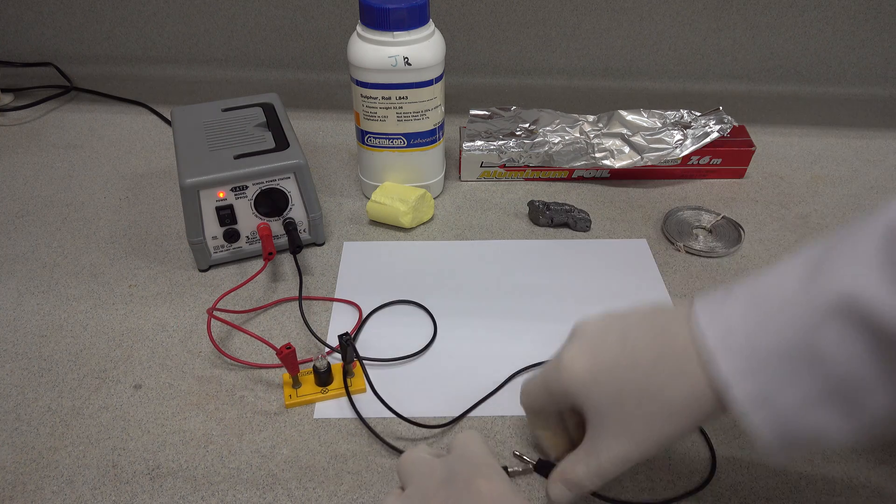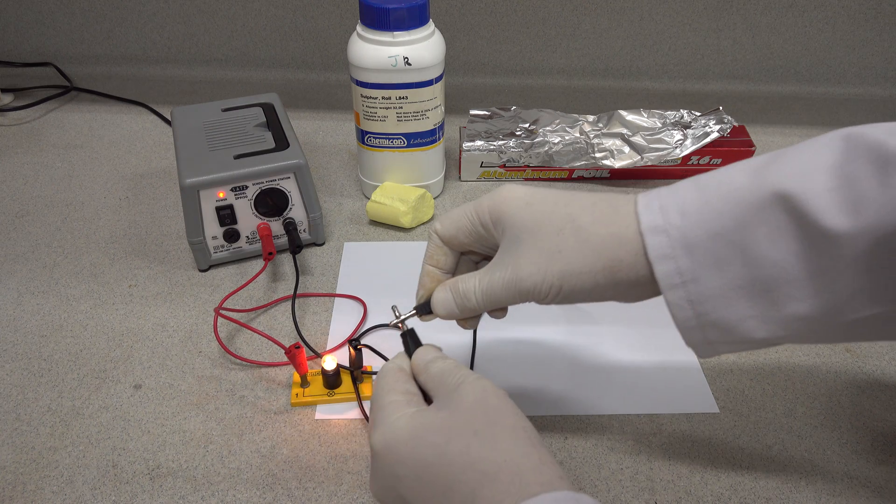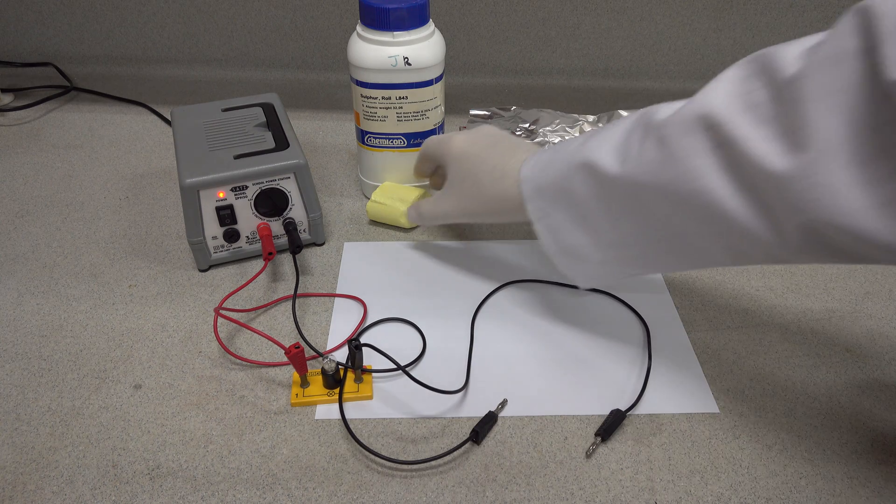First, here's our electrical circuit. You can see we've got a power pack, some leads, a light bulb, and if we join the two contacts together, the bulb lights up.